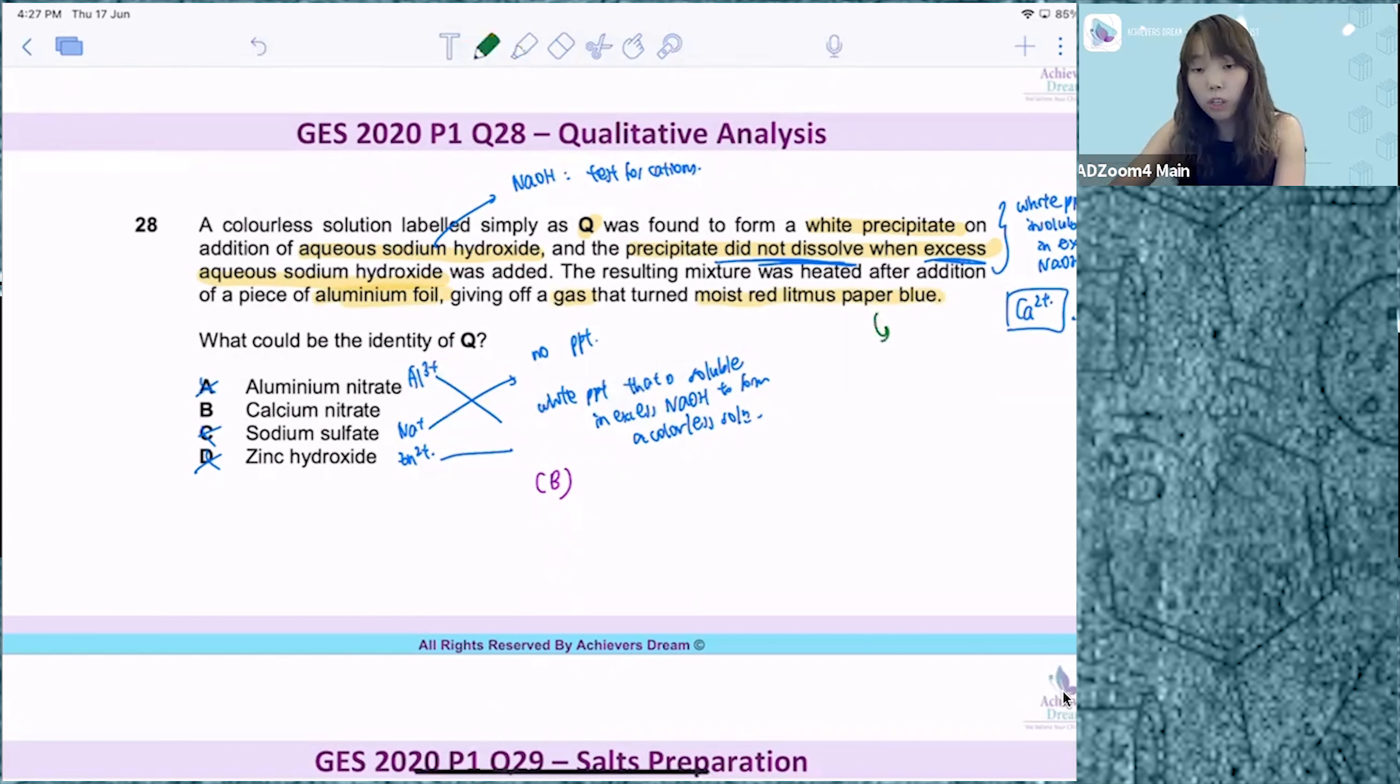So when it turns moist red litmus paper blue, it means that there's production of an alkaline gas. And in your syllabus, the only alkaline gas that you are required to know is ammonia gas.